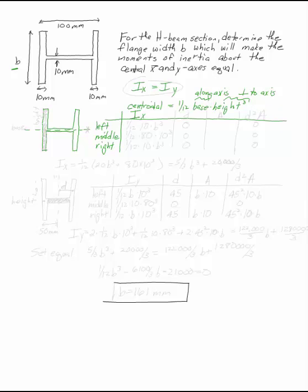In this case, B the base goes in the horizontal direction and the height goes in the vertical direction. The left piece of the H is 1/12 times base times height cubed, which is 10 times B cubed. The middle piece is 1/12 times 80 — that's the base — times (100 minus 2 times 10), and 10 cubed. The right piece is 1/12 times 10 times B cubed.